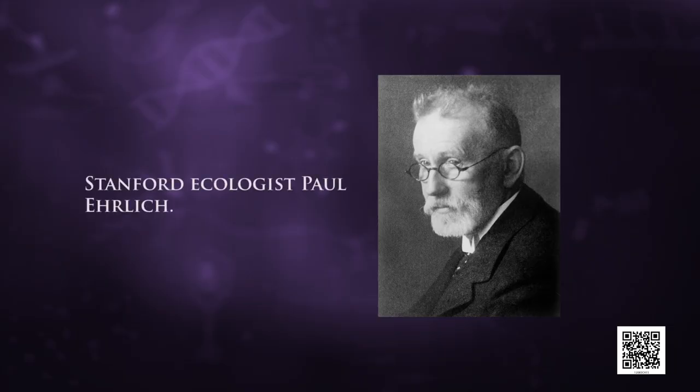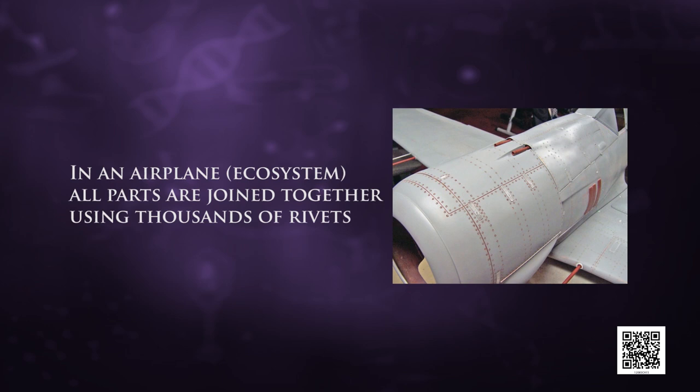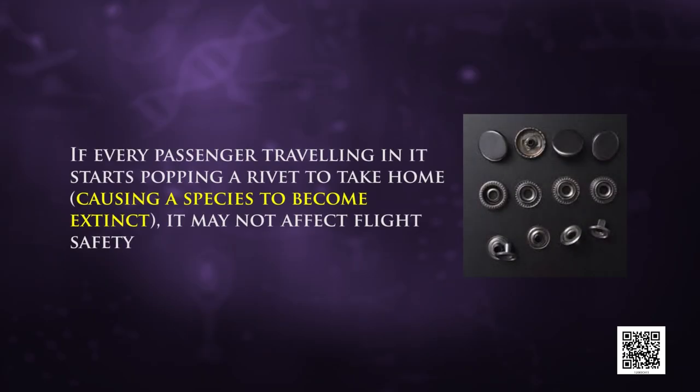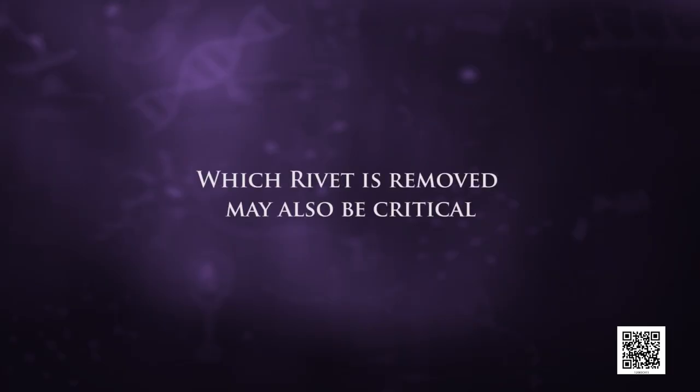There are no direct answers, but Stanford ecologist Paul Ehrlich used the rivet popper hypothesis as an analogy. In an airplane — considered as an ecosystem — all parts are joined using thousands of rivets, which substitute for species. If every passenger pops out a rivet and takes it home, causing a species to become extinct, it may not affect flight safety initially. But as more and more rivets are removed, the plane becomes dangerously weak. Furthermore, which rivet is removed may also be critical — loss of rivets on the wings is obviously more serious than loss of rivets on the seats or windows inside.